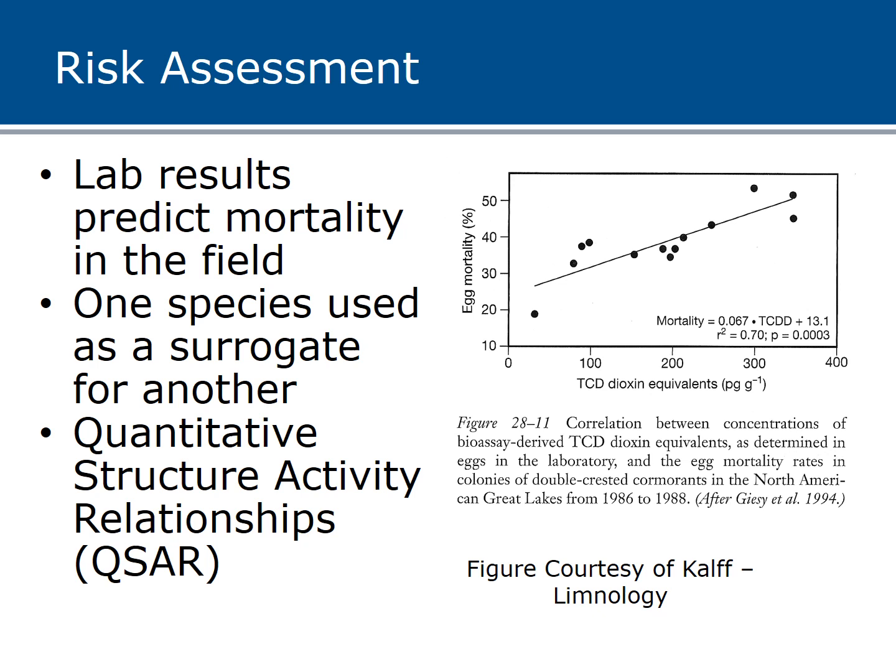We take the results from these toxicity tests and use them in what's called risk assessment — we want to take the lab results to predict mortality in the field. We can't test every organism, so we might use one species as a surrogate for another, like a fathead minnow or mummichog. This lets us develop QSARs — quantitative structure-activity relationships. For example, in this graph, as you increase the dioxin equivalent dose, you see an increase in egg mortality. It's like chili peppers: a jalapeño is a one, a spicier pepper might be eight times as spicy, or a scorpion pepper a thousand times as spicy as a jalapeño. That's what a QSAR is in terms of risk assessment.